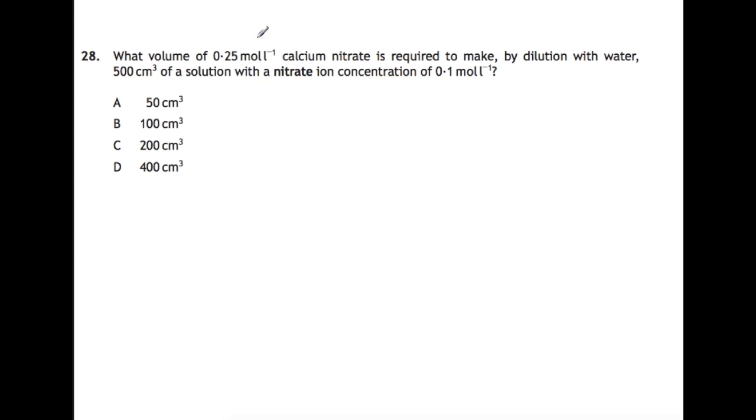Question 29. What volume of 0.25 molar calcium nitrate is required to make by dilution with water 500 centimeters cubed of a solution with a nitrate ion concentration of 0.1 moles per liter? So calcium nitrate has this as the formula.